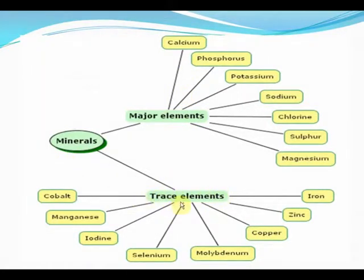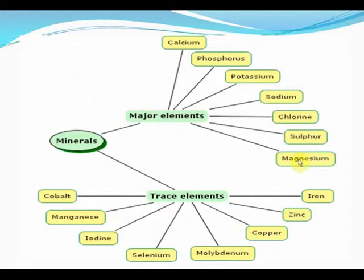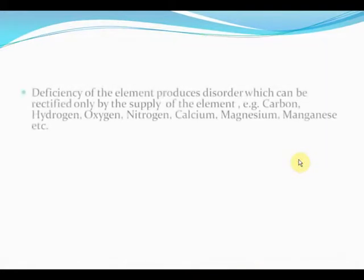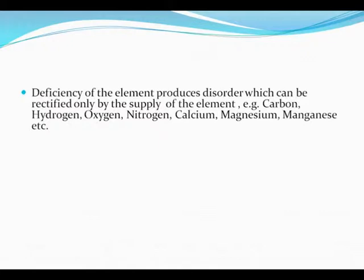There are major elements and trace elements. Trace elements are required in very minimal quantities and include cobalt, manganese, iodine, selenium, molybdenum, copper, zinc, and iron. Major elements are calcium, phosphorus, potassium, sodium, chlorine, sulfur, and magnesium. Deficiency of elements produces disorders which can be rectified only by the supply of those elements — for example, carbon, hydrogen, oxygen, nitrogen, calcium, magnesium, and manganese.